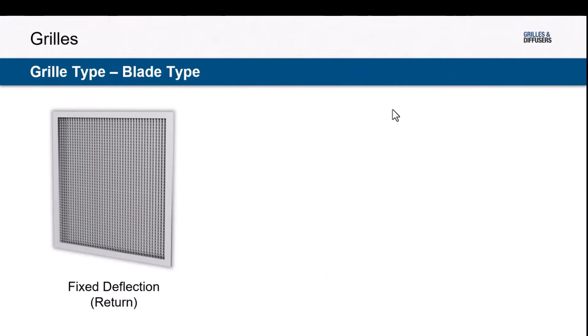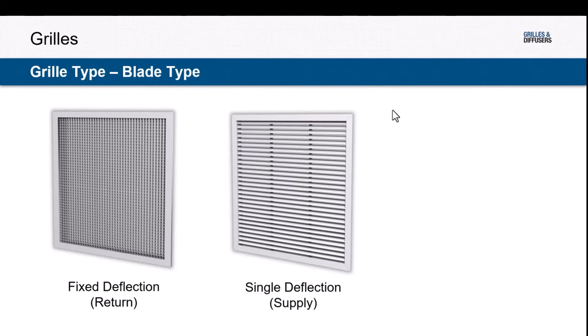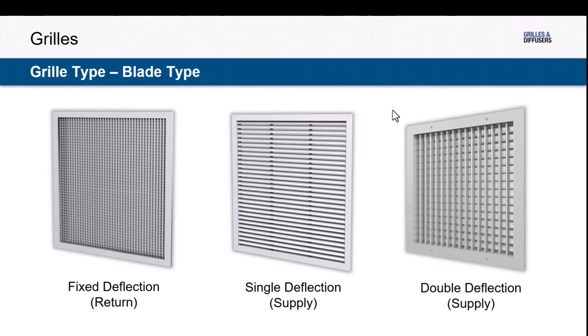Looking at a couple types of grills: grills could be fixed deflection — an example is an egg crate grill. Return grills are typically fixed blade. Single blade deflection has one set of blades, while a double deflection grill has two sets — one horizontal and one vertical. In the case of double deflection, you have both sets of blades. Single and double deflection grills will be adjustable for a supply application.